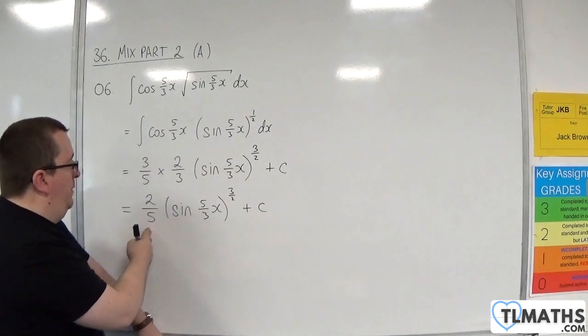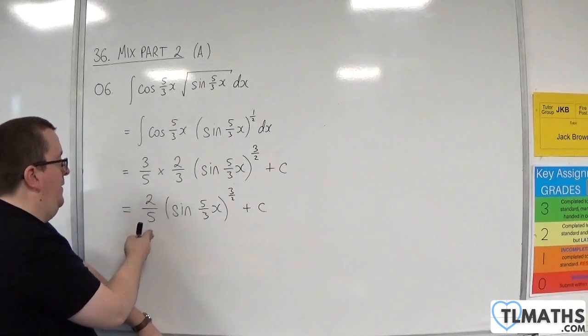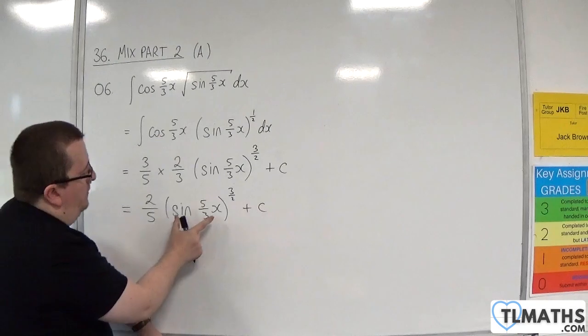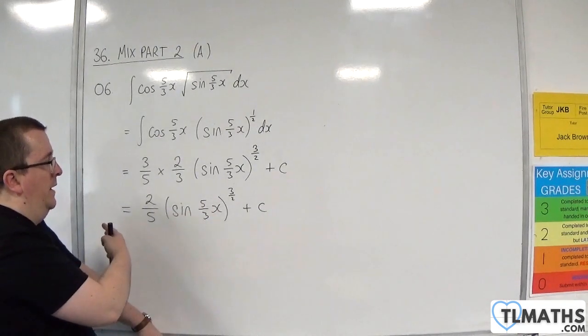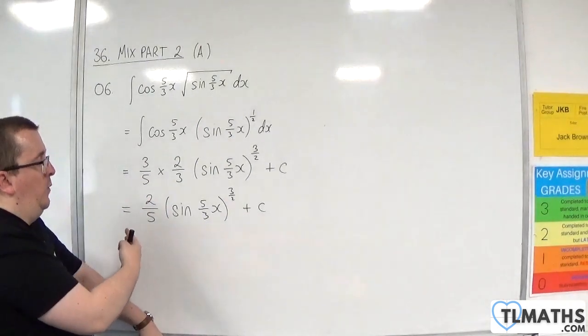So the 2 fifths will multiply with 3 halves, which will give me 3 fifths. And then the derivative to the inside will come outside, which will bring 5 thirds out. Which will multiply with the 3 fifths to make 1.